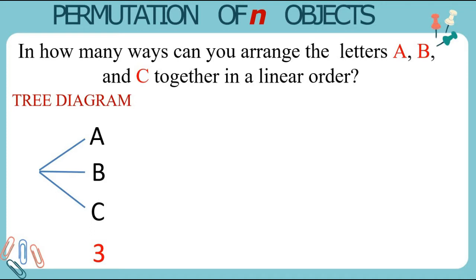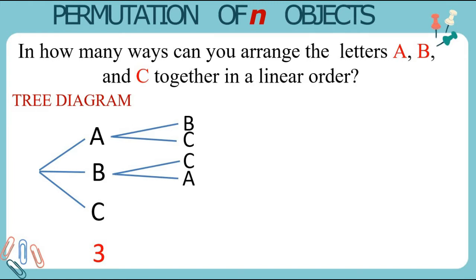Now, if we take A, we only have 2 options — we can have B or C. If we take B, we can have C or A. If we take C, we can have A or B. This is our second order, and therefore we only have 2 choices.